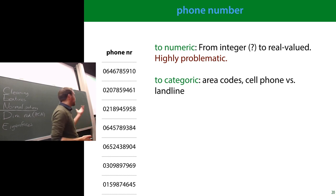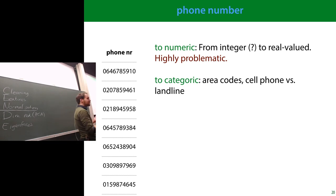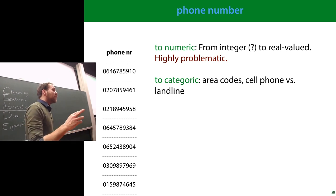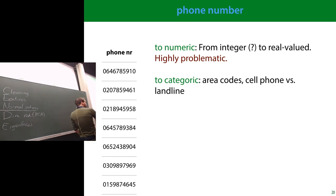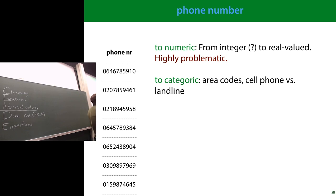In Dutch phone numbers, for example, the first three digits give you the area code, and numbers starting with 06 are mobile. These make good categorical features, but you have to extract them from the raw phone number. You have to think about what information might be in there and how to extract it — this is more of an art than a science.